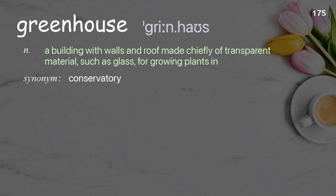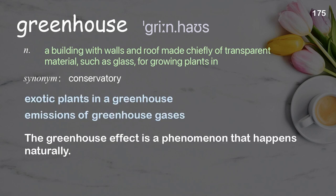Greenhouse: a building with walls and roof made chiefly of transparent material, such as glass, for growing plants in. Examples: Exotic plants in a greenhouse. Emissions of greenhouse gases. The greenhouse effect is a phenomenon that happens naturally.